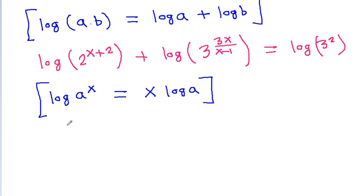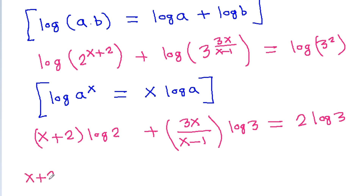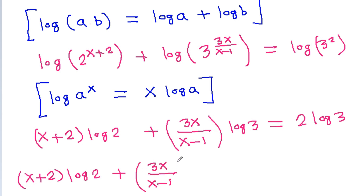So, this will be equal to x plus 2 times log 2 plus 3x by x minus 1 times log 3 is equal to 2 times log 3. And it is x plus 2 times log 2 plus 3x by x minus 1 times log 3 minus 2 times log 3 is equal to 0.